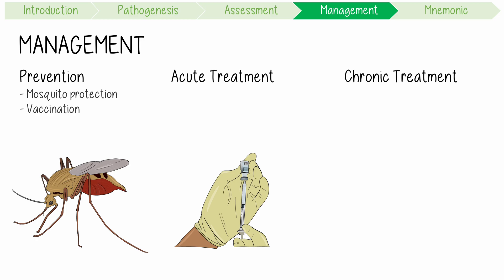Acute disease treatment revolves around supportive care with paracetamol, NSAIDs, and fluids. There is no specific antiviral therapy for acute Chikungunya virus infection currently.